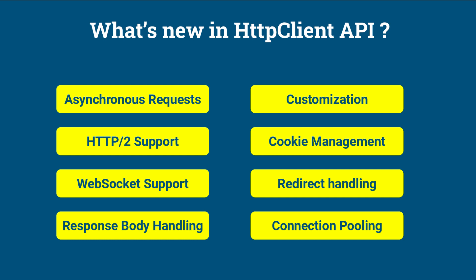In Java 11, the HTTP Client API was introduced as a modern alternative to the HTTP URL Connection API, providing a more flexible and powerful way to send HTTP requests and handle responses. These are some of the key features and improvements of the HTTP Client API in Java 11.